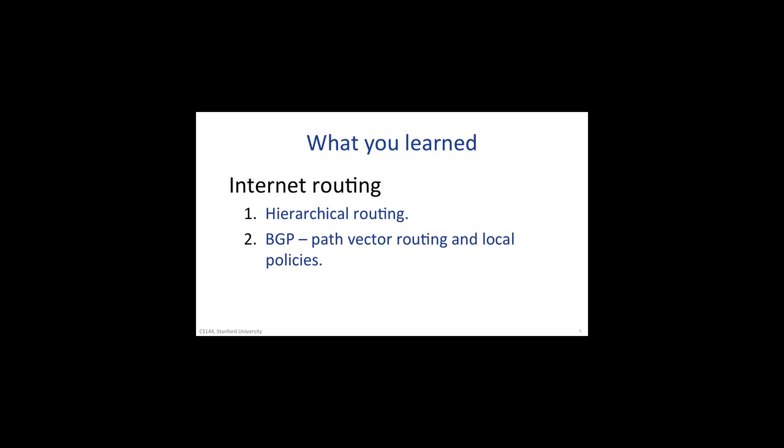BGP is the only sanctioned way to exchange routing information between autonomous systems in the Internet today. Basically, every AS advertises to its neighbors the path packets will take to reach every prefix in the Internet. The path is the set of ASs the packet will pass through along the way. We learned how every BGP router can use a locally defined policy to decide which route advertisement to accept and use to route packets.